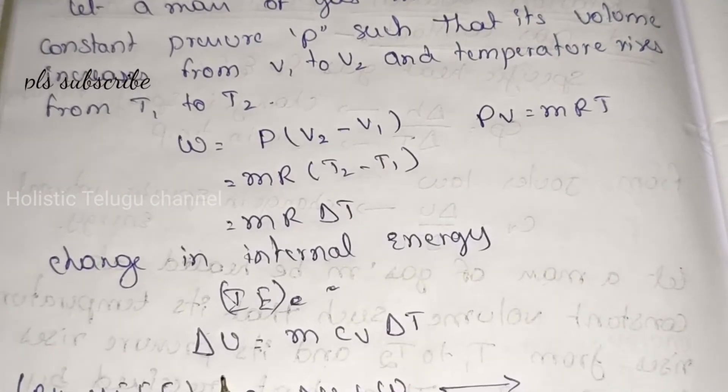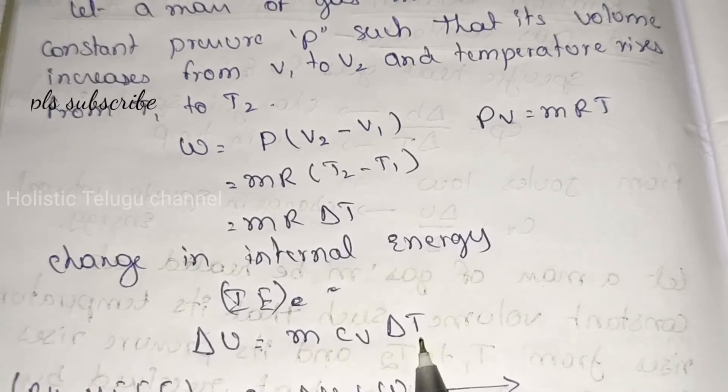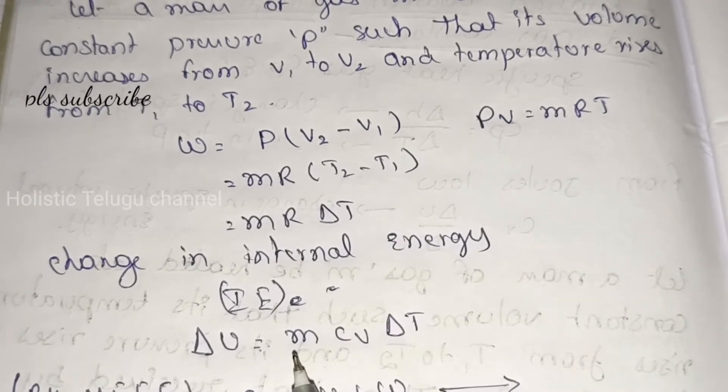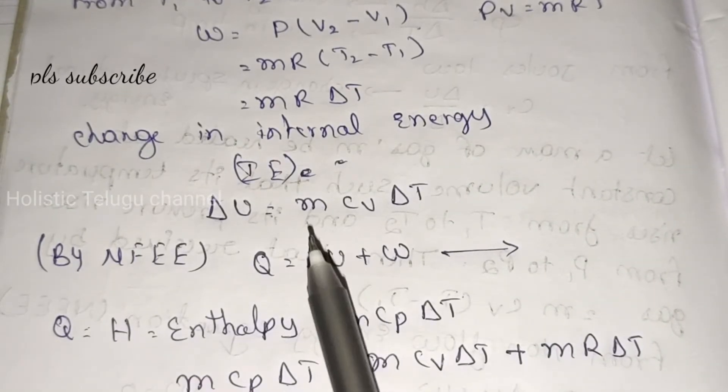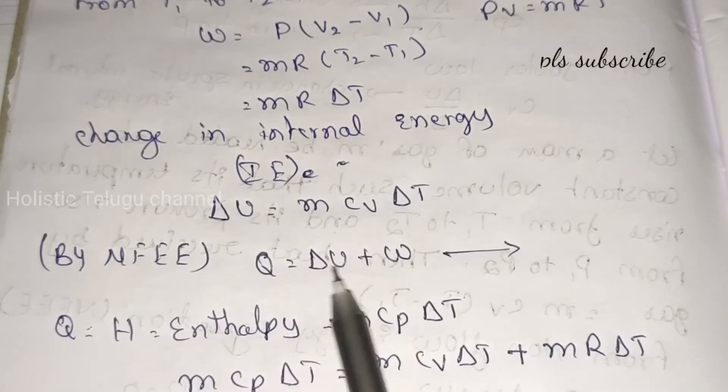So here work is m R delta T. The change in internal energy is delta U which is m Cv delta T.